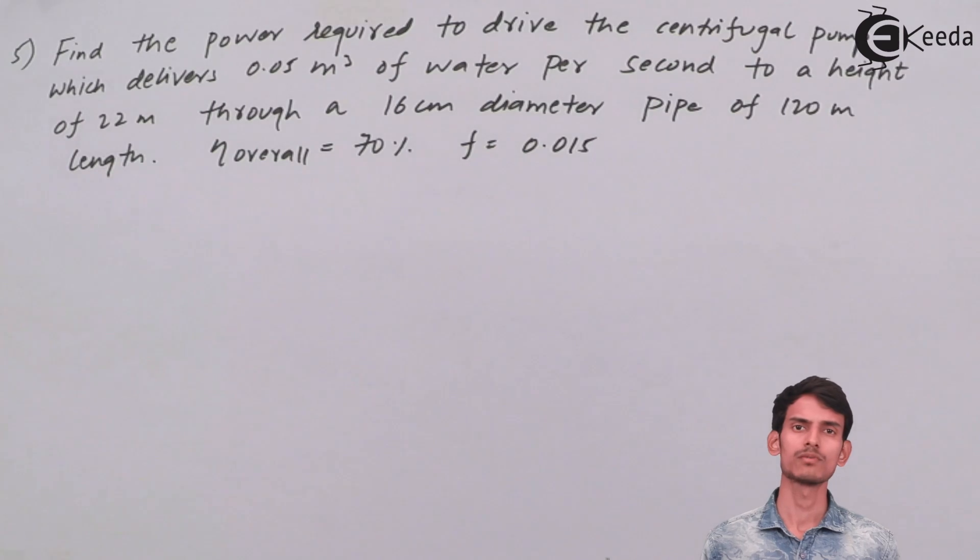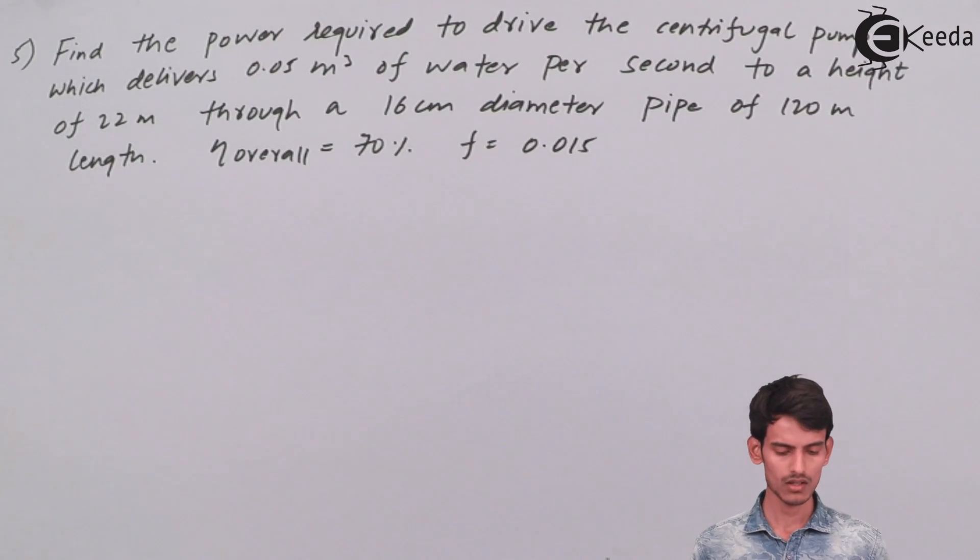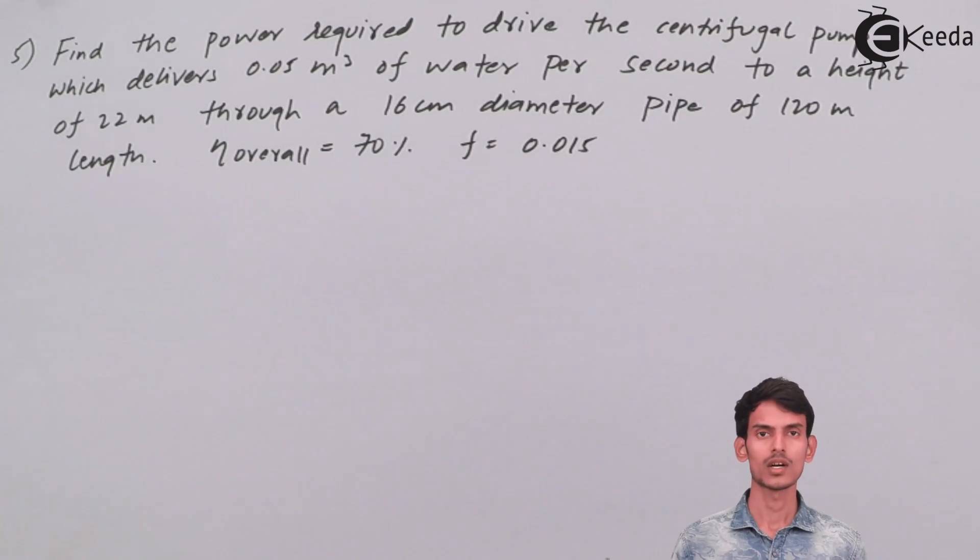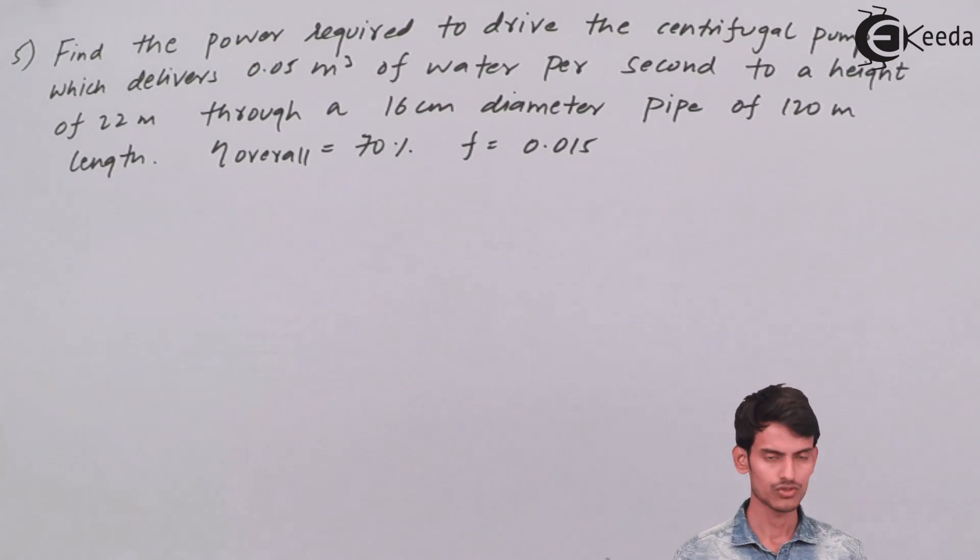We need to calculate the power required to drive the pump, so how much power you need to supply to the pump so that it can deliver the water at a given value of H with certain friction losses. Let's first write down the given data and solve the question.